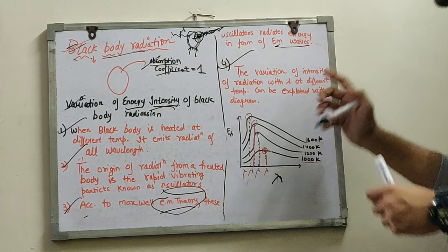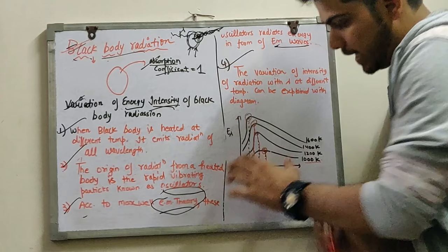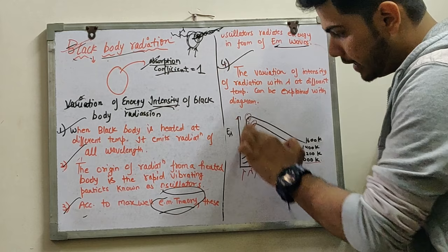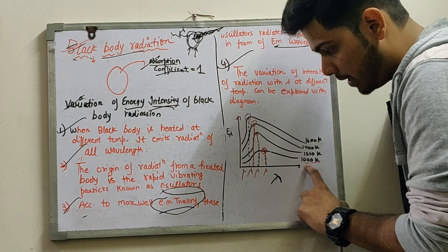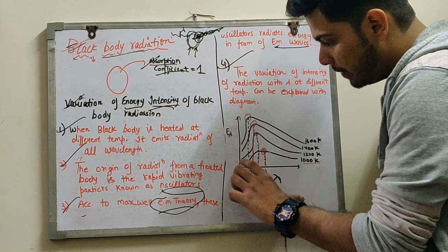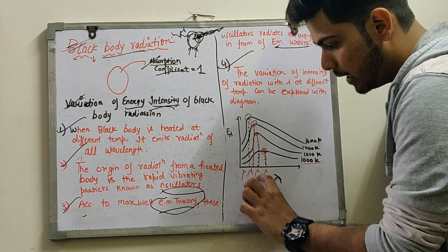Now the fourth point: variation of intensity of radiation with lambda at different temperatures. This is a graph with lambda on the x-axis and E-lambda (energy) on the y-axis. First, at temperature 1000 Kelvin, we get a maximum value of energy at a particular lambda. When we increase the temperature to 1200 Kelvin, we again get a maximum value of energy at a particular lambda.